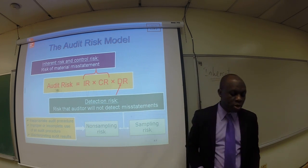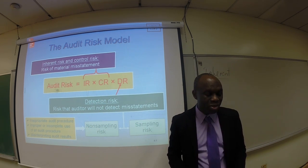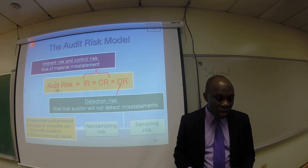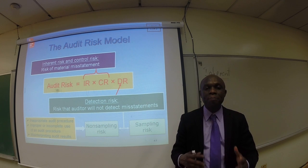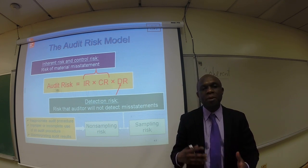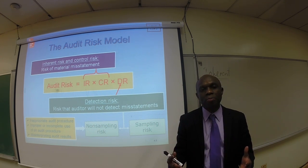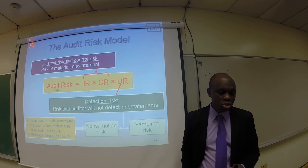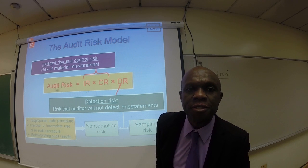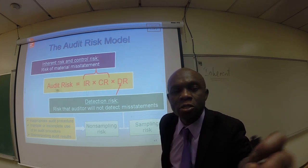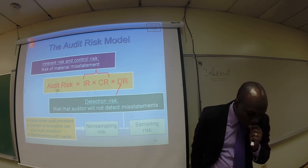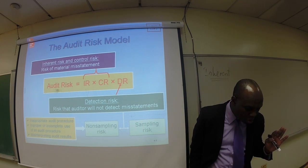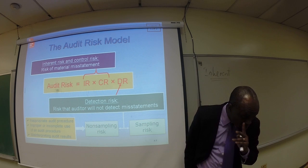Let's take a look at the third component: detection risk. Detection risk is the risk that the auditor's tests and other procedures performed would not be able to detect a material misstatement. Those are the definitions of the three components of audit risk.